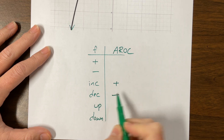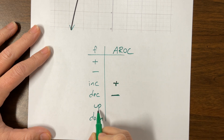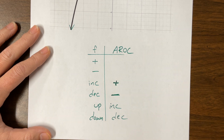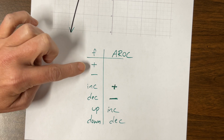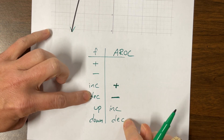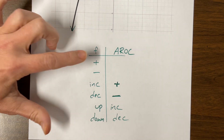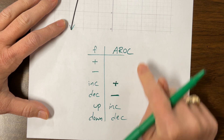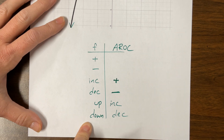When the graph is decreasing, that corresponds to the average rate of change being negative. If our graph is concave up, that corresponds to the average rate of change being increasing. If our graph is concave down, that corresponds to the average rate of change being decreasing. So it gets a little deceptive — something can be positive, negative, increasing, or decreasing, and you have to pay attention to whether the problem is talking about the function or the average rate of change, because they're different things.